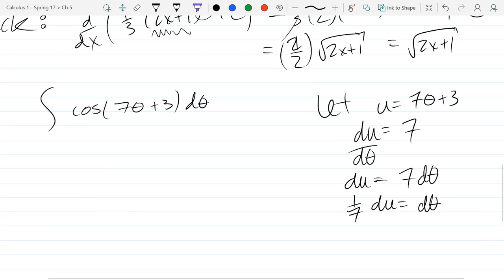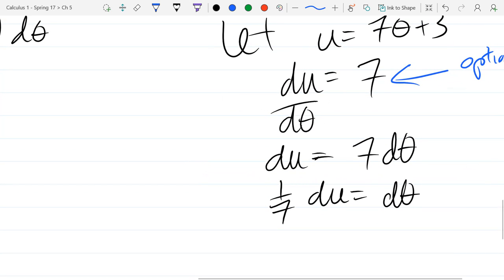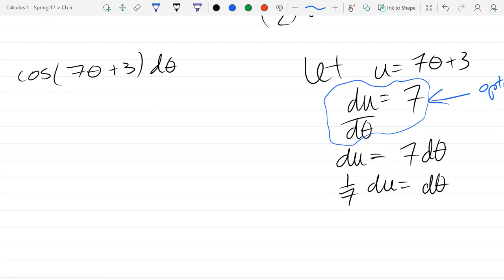I don't have a 7 d theta so I need to multiply by a seventh. Now if you watch other people do u-substitutions you're going to find that most people, and including I think the way your book's written, don't write that line that I just erased. So this line right here is optional. You can take the derivative on the next line and write d theta on the right side. You don't have to write this line down, and you're going to find a lot of people don't actually write it down.